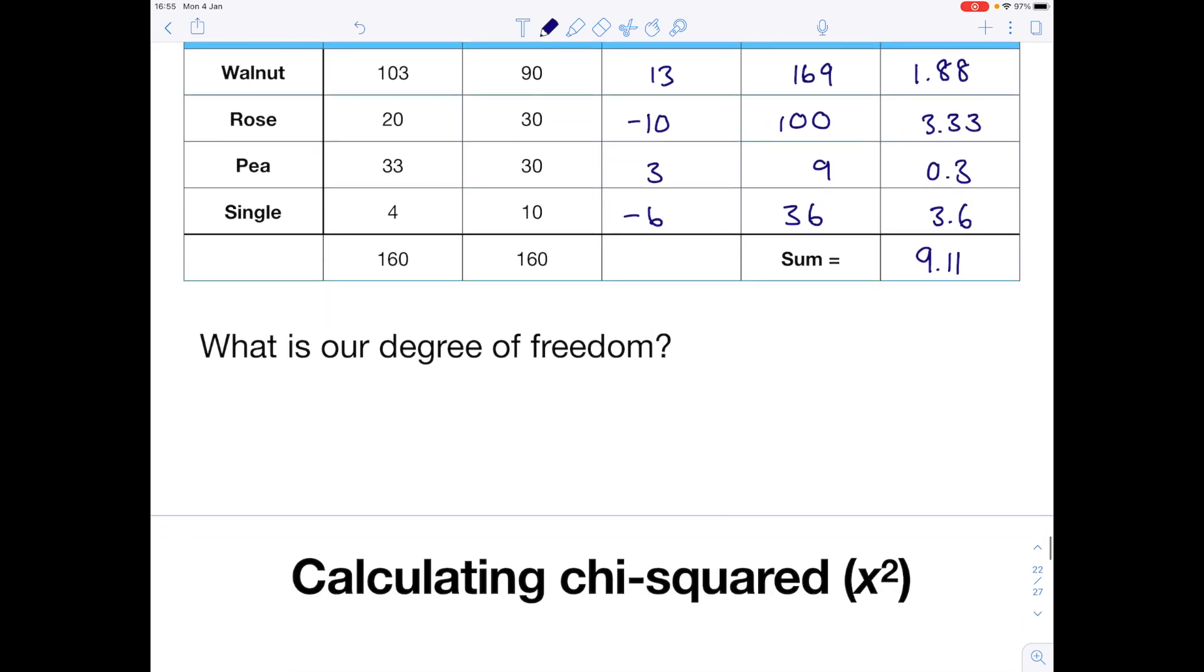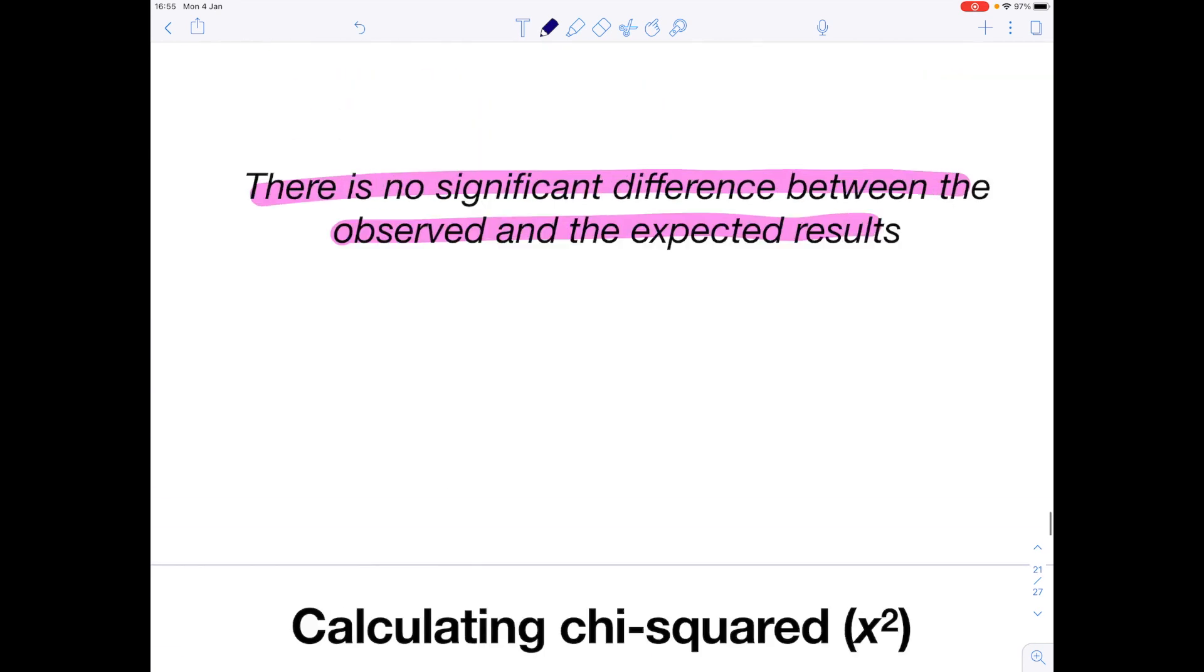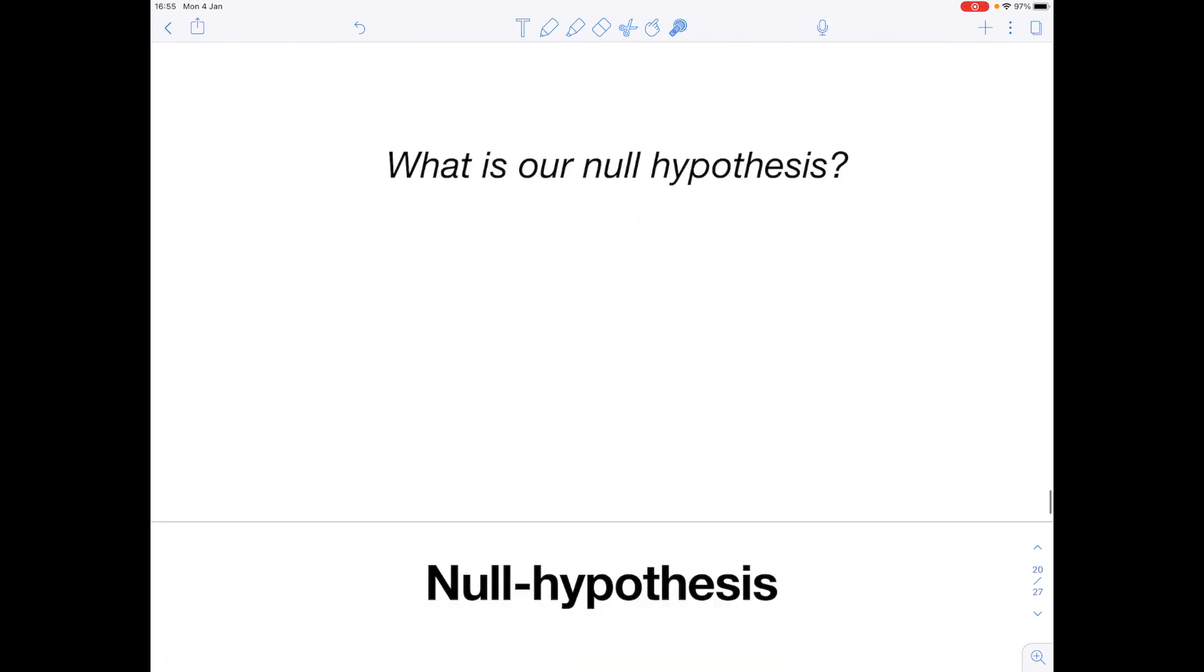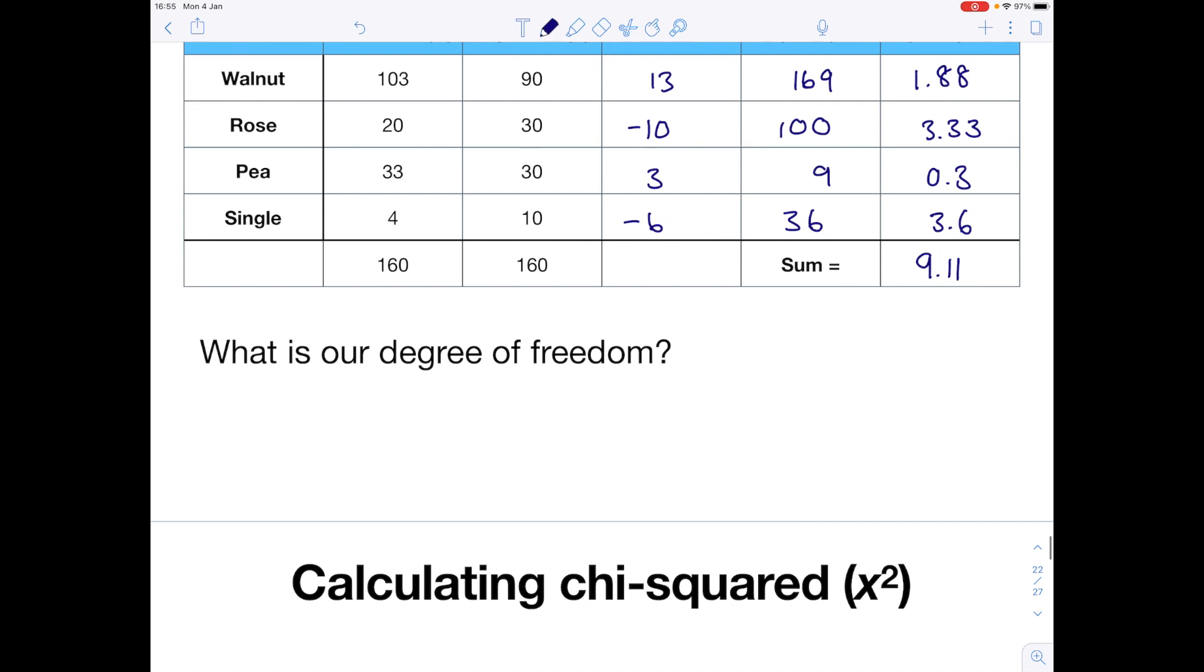What is our degree of freedom? So look at the number of categories. The number of categories is the number of comb types: pea, walnut, rose, single. So that's four categories. Remember we minus 1 to get 3 degrees of freedom.